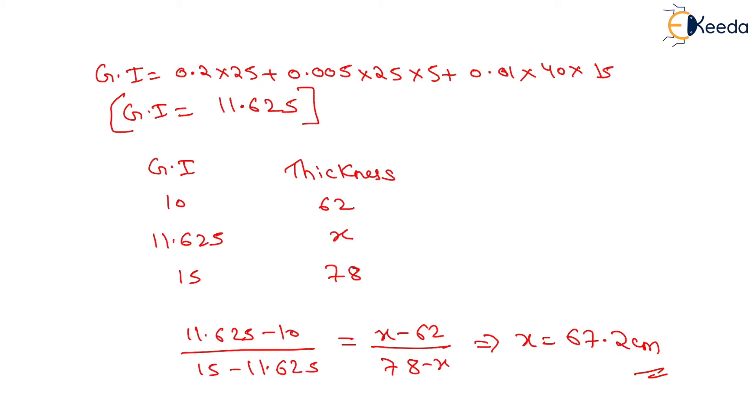Solving the interpolation, we get the thickness of the pavement equals 67.2 centimeters. That is all about this numerical.